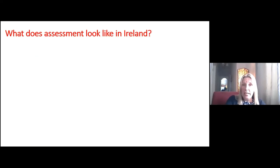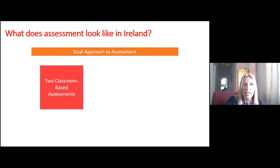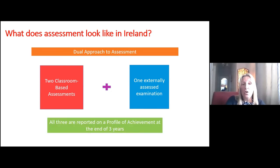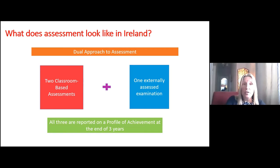What does assessment look like in Ireland? We have a dual approach: two classroom-based assessments, which are new over the last couple of years, and one externally assessed exam. We're actually in the third year of the reform, so students have taken part in both classroom-based assessments. The big change is that all three are reported on a profile of achievement at the end of three years. We've moved away from a grading system — there's no A, B, C, or fail, and no percentages. It's now a descriptor.